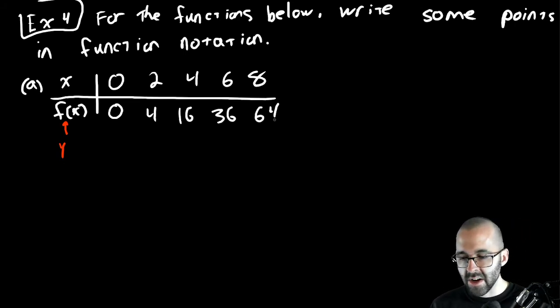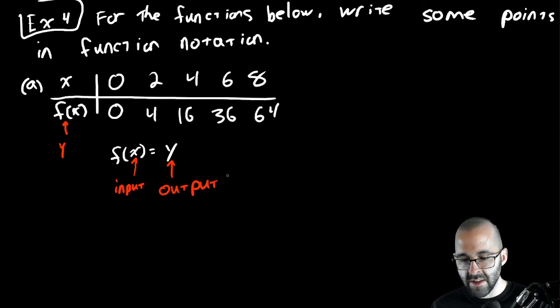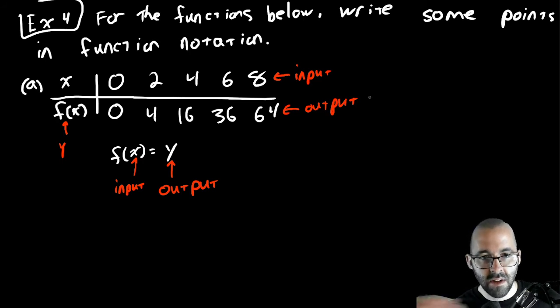So all of our answers are going to be of the form f of x equals y. And again, x is our input and y is our output. Another way of saying that is our inputs are up here and our outputs are down there.